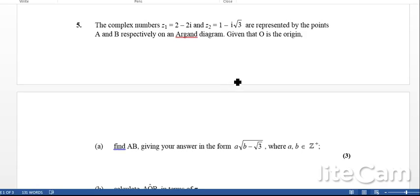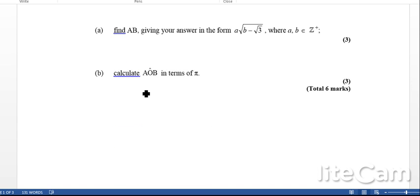The next question: the complex numbers z₁, which is 2-2i, and z₂ is 1-i√3, are represented by points A and B on the Argand diagram, where O is the origin. First they want us to find AB, and then calculate AOB once we've done that.